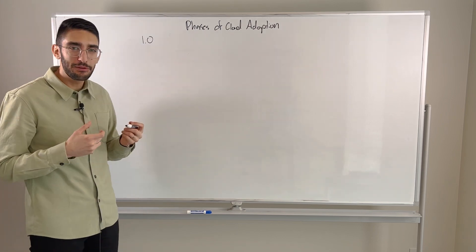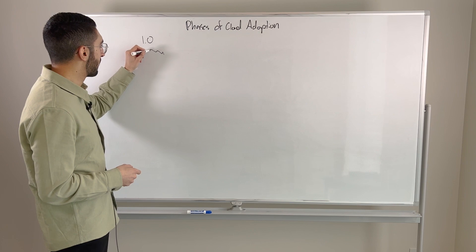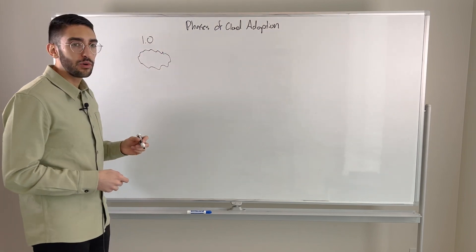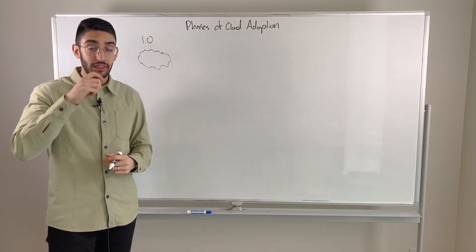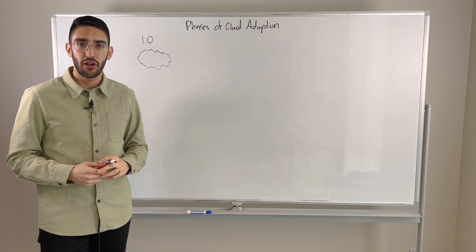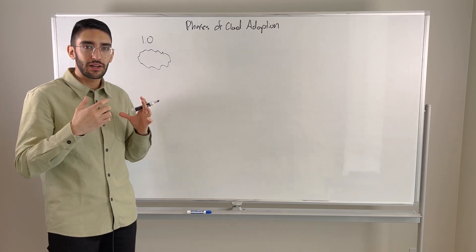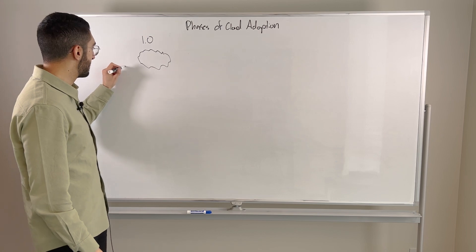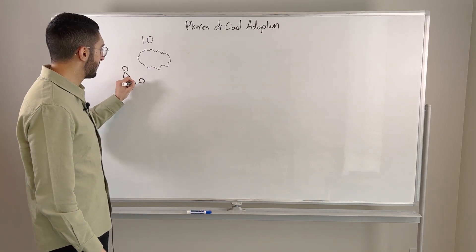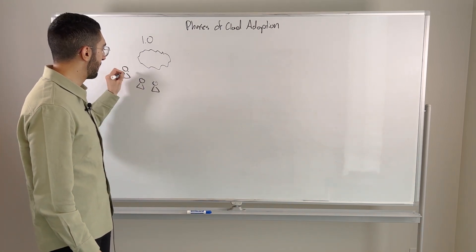I think where most people start then is by saying, great, let's go to one of our preferred cloud partners. We're going to sign an enterprise agreement with them. Maybe we commit several million dollars in spend to them. And then we're going to give those keys to our development teams and allow them to start building applications directly on cloud.